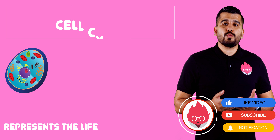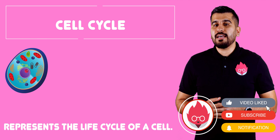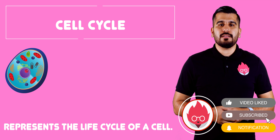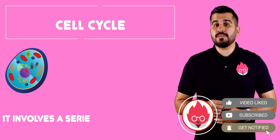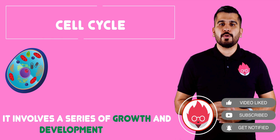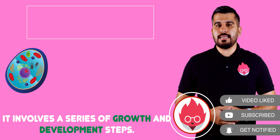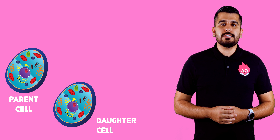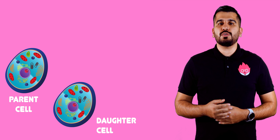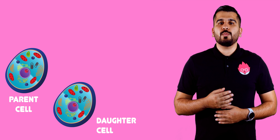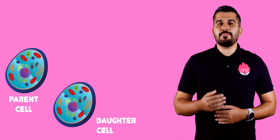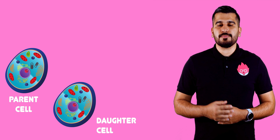The cell cycle represents the life cycle of a cell. It involves a series of growth and development steps that leads to the formation of a new cell. We can summarize the main events as follows.